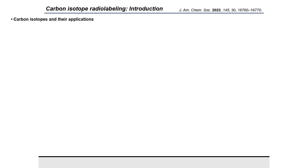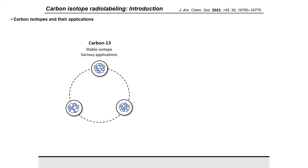To begin with, I would like to give a brief introduction about carbon isotope radiolabeling, which is the main field of interest in our lab. As you all may know, there are three main isotopes of carbon. The first one is carbon-13, which is the stable isotope with various applications.